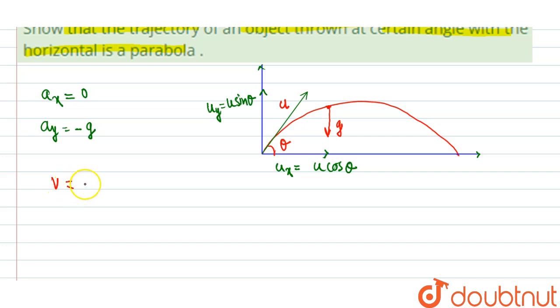So from here, velocity at any instant along x direction, vx equals u plus ax. That is, ax is 0, so we get from here that vx equals ux, that is u cos theta. Velocity along x axis is always constant. Velocity in x direction is always constant.